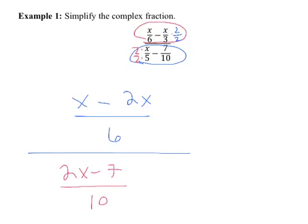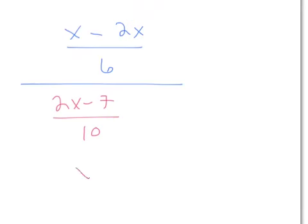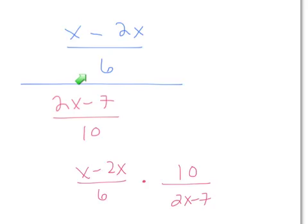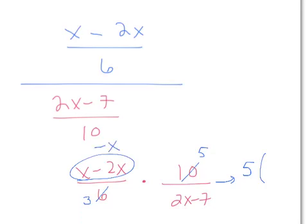If we're taking a fraction and dividing it by another fraction, the definition of division is to multiply by the reciprocal. So we've got x minus 2x all over 6, times 10 over 2x minus 7. This is the reciprocal from the denominator. Let's cross-cancel: this becomes a 3, this becomes a 5. The numerator results in 5 times negative x — since x minus 2x is negative x — so that's negative 5x. In the denominator, we have 3 times the quantity 2x minus 7.